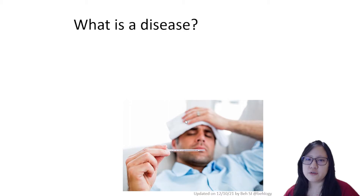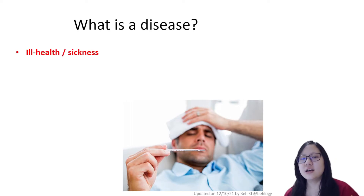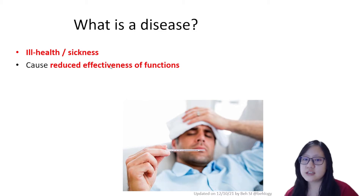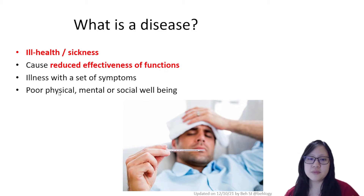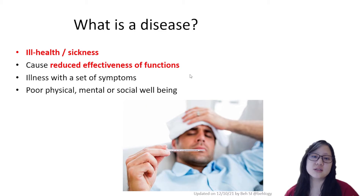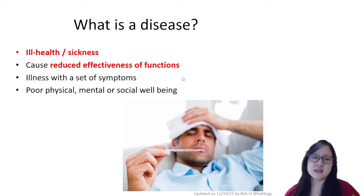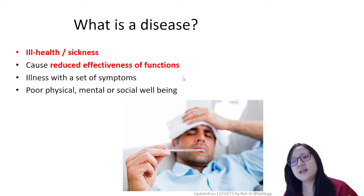Let's start this chapter off with defining some terms. What is a disease exactly? Disease is ill health or sickness that can cause reduced effectiveness of functions. This could be physical, mental, or social problems. Mental health illnesses like depression is considered a disease because it causes reduced effectiveness of mental or social functions — it is considered ill health or sickness. That's how you define disease.